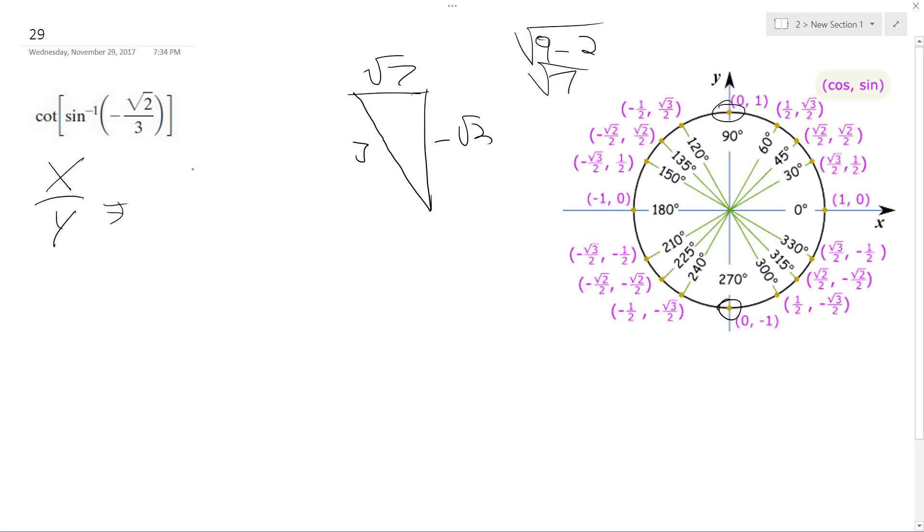So that leaves us with root 7 over negative root 2. We want to rationalize the denominator.